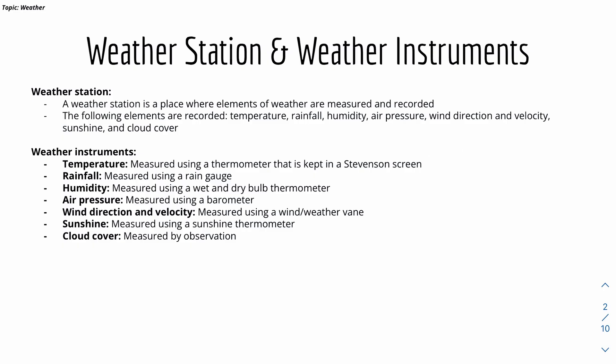Rainfall is measured using a rain gauge. Humidity is measured using a wet and dry bulb thermometer or hygrometer. Air pressure is measured using a barometer. Wind direction and velocity are measured using a wind or weather vane. Sunshine is measured using a sunshine thermometer. And cloud cover is measured by observation.